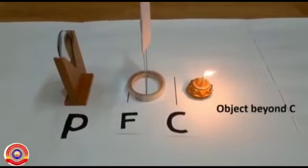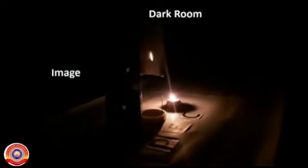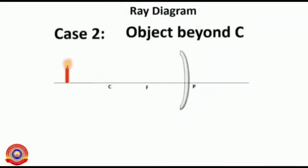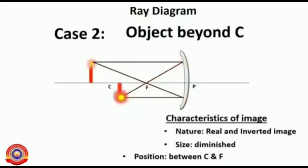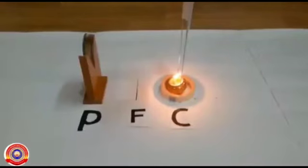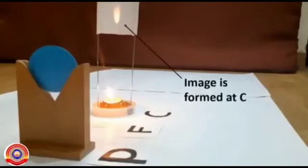Next, the object is placed beyond C. Where does the image form? If the object is placed beyond C, the image is formed in between F and C. Let's see how to draw the ray diagram.